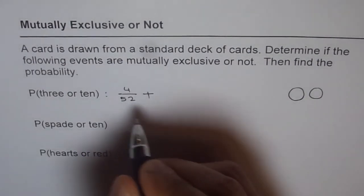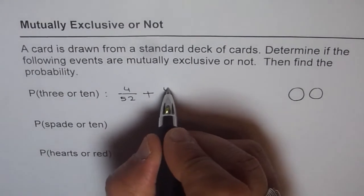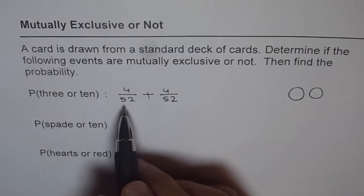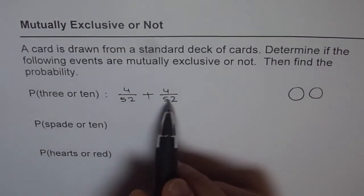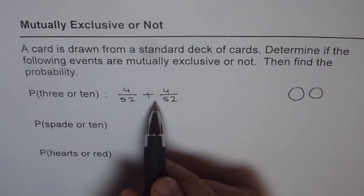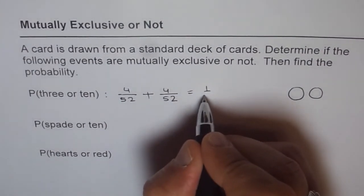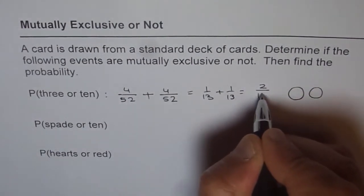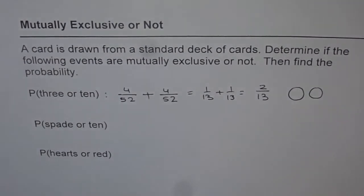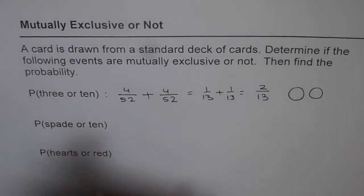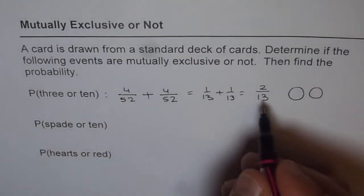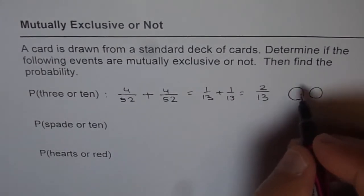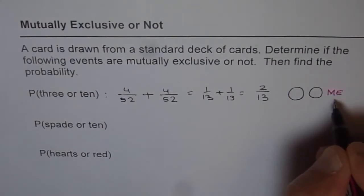There is also the ten — how many tens are there? There are four tens, so four over 52. Since these two are mutually exclusive events with no overlap, their probabilities get added up. So it is 1/13 plus 1/13, giving an answer of 2/13. We write this as mutually exclusive, or ME.